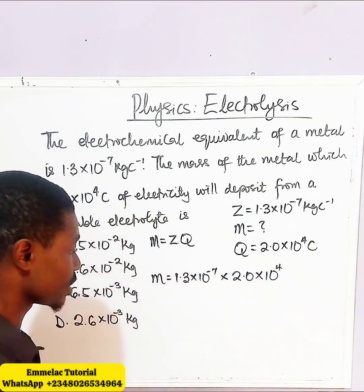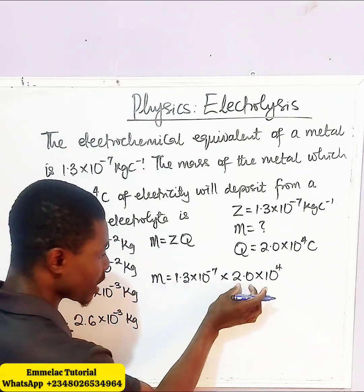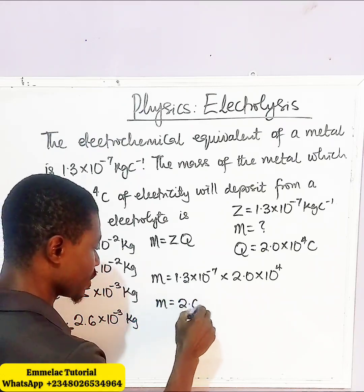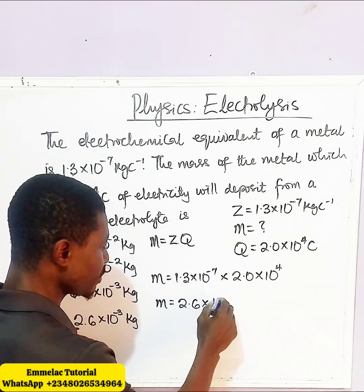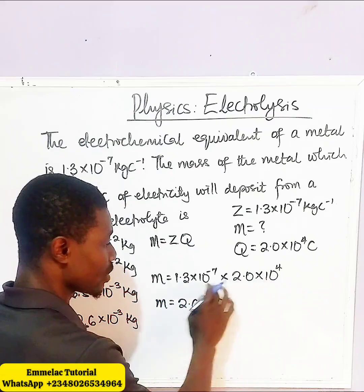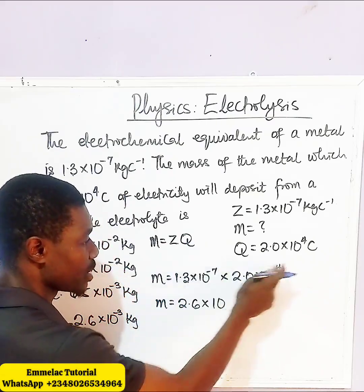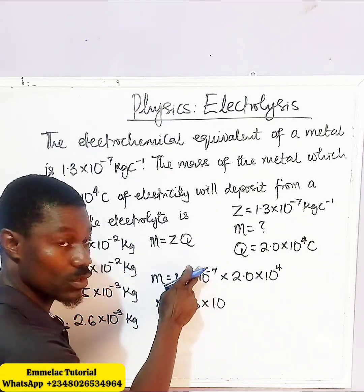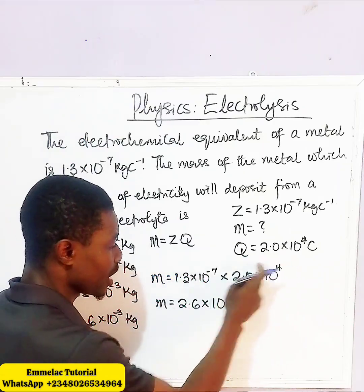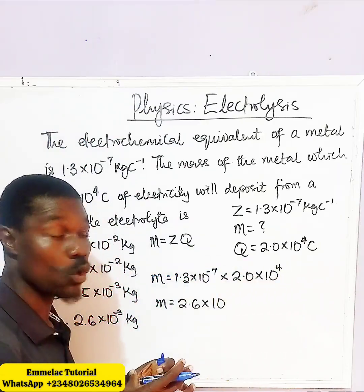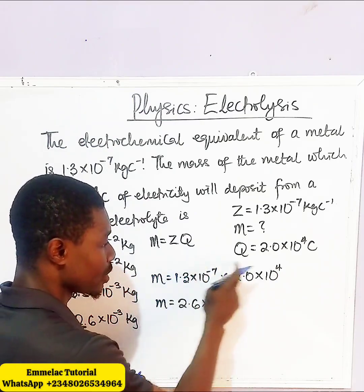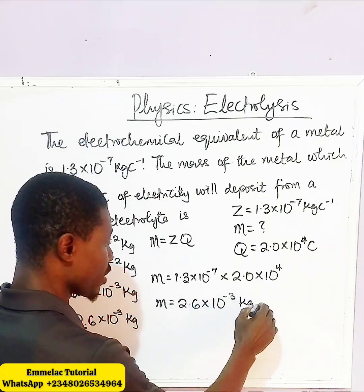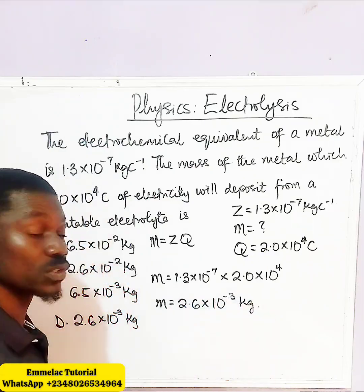This is straightforward. 1.3 times 2.0 gives us 2.6. Then, since we have the same base of 10, we apply the law of indices and the exponents sum up: minus 7 plus 4 gives us minus 3. So we have 2.6 times 10 to the power minus 3 kilograms, which is the unit of mass.